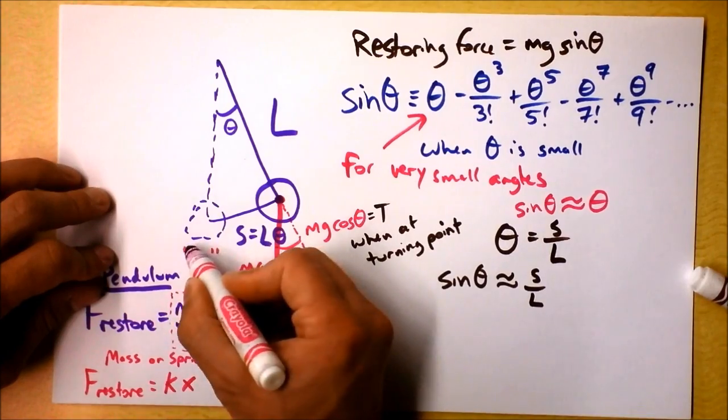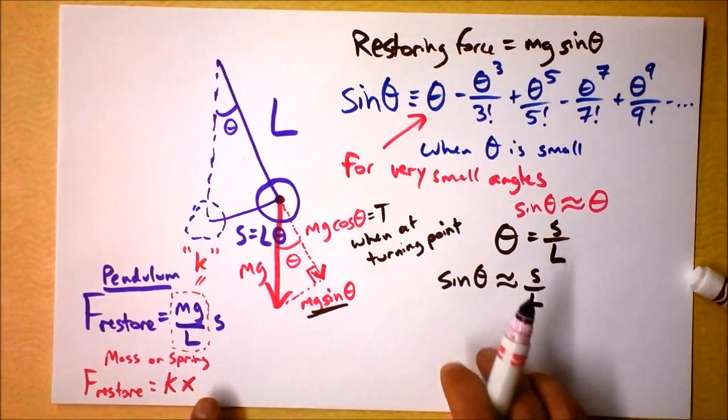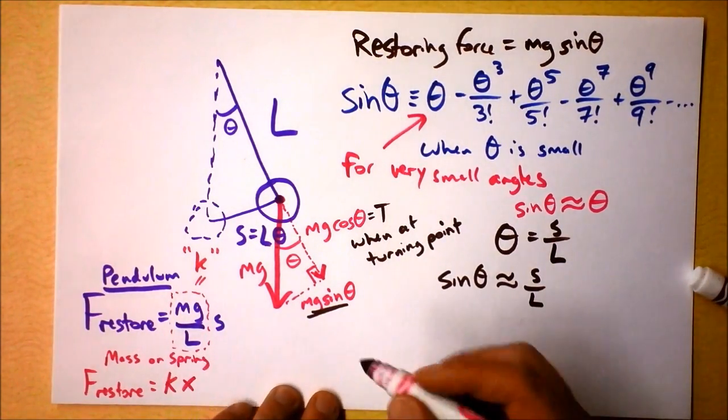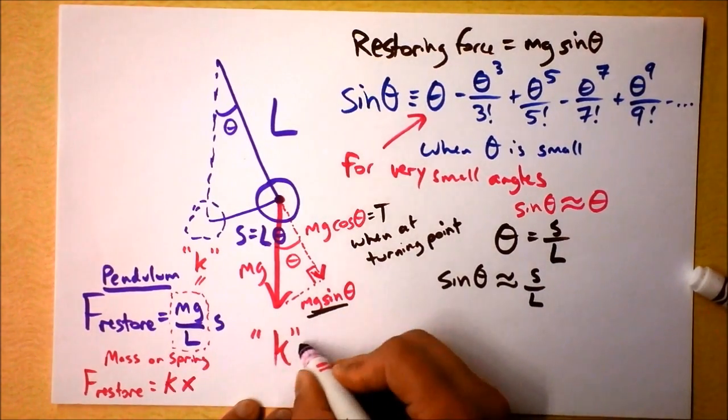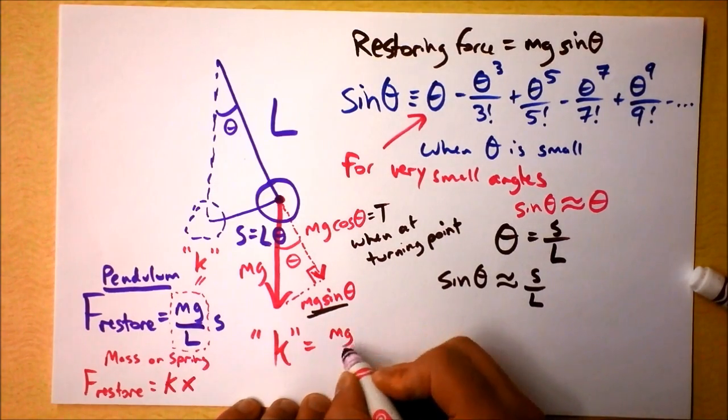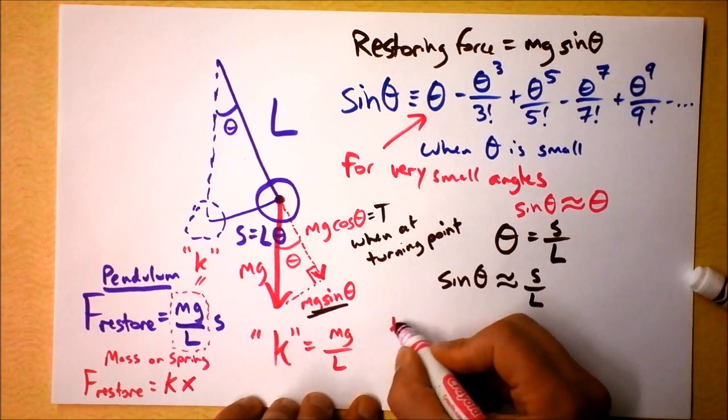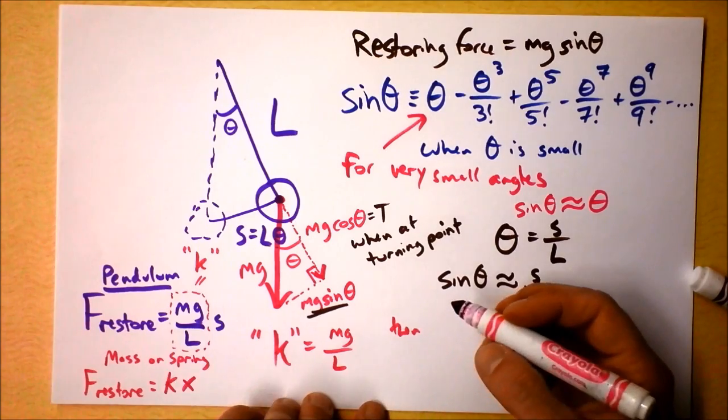So I'll put it in quotes. K is our spring constant. Now, we've got some interesting results. If we establish that K, in quotes, is actually equal to mg over L, then we can say, well, we know about period, right? We already know about the period of a pendulum.